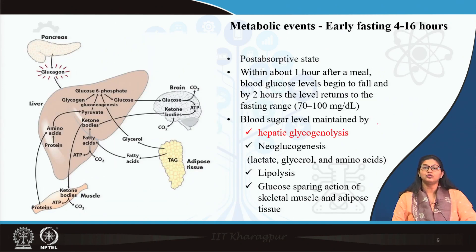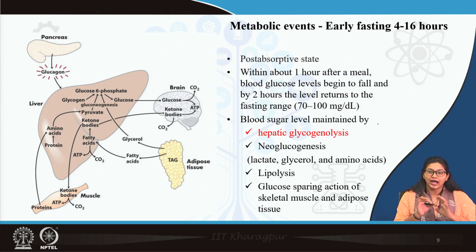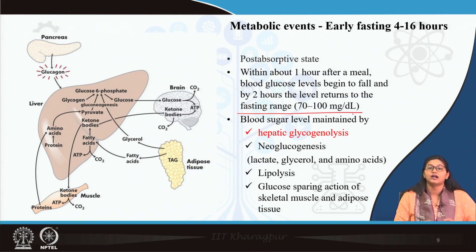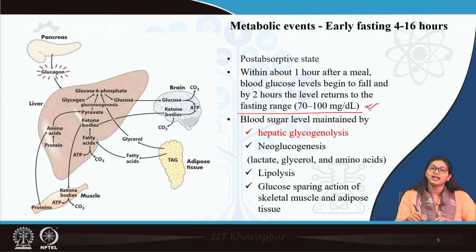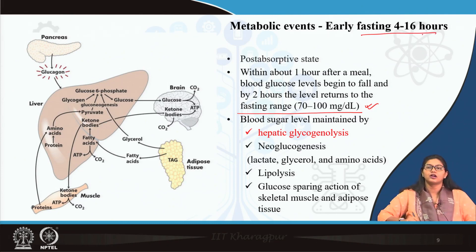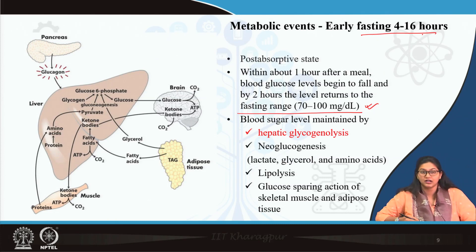Moving to the fasting phase — the early fasting phase occurs at the post-absorptive state when nutrient absorption from the gut is complete. After a meal, within one hour blood glucose is normalized and begins to fall; by two hours it returns to the fasting range of 70 to 100 mg/dL. The cell then shifts from the well-fed to the fasting phase. This early fasting phase lasts approximately 4 to 16 hours, and blood glucose level is maintained by the hormone glucagon.